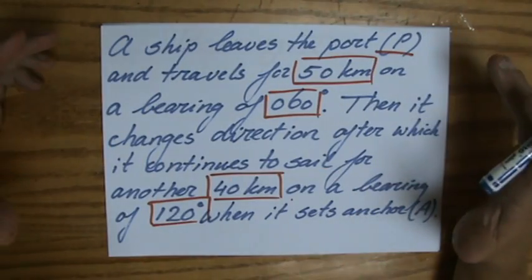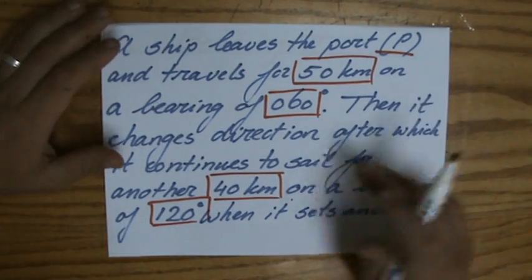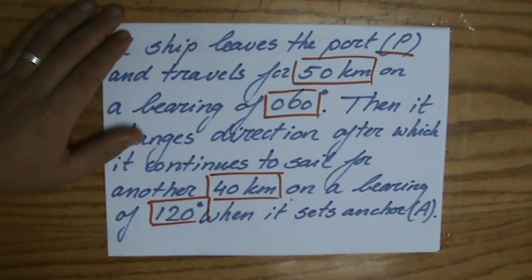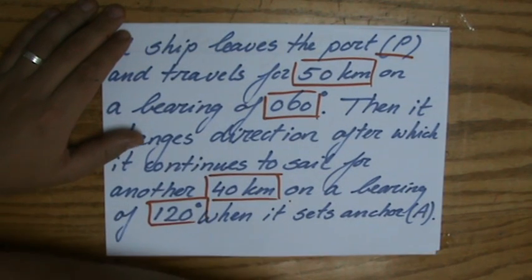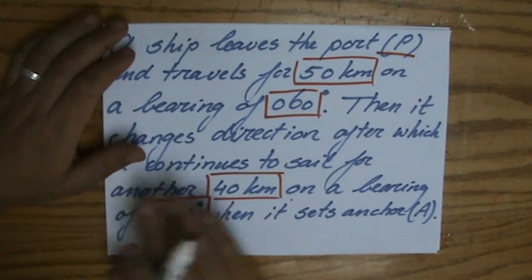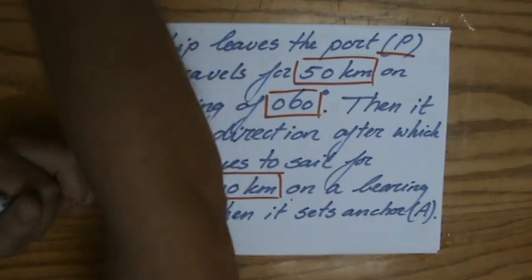Then it changes direction, after which it continues to sail for another 40 kilometers on a bearing of 120 degrees, and then it sets for anchor at point A.